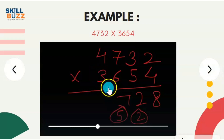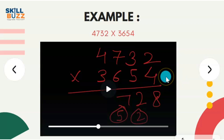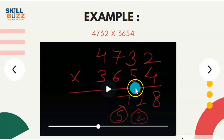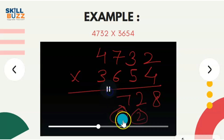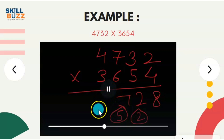Fourth step considers all four digits: 4 into 4 is 16, 3 into 2 is 6, 7 into 5 is 35, and 6 into 3 is 18. These add up to 75. 75 plus 5 carry is 80. Write 0, carry 8.